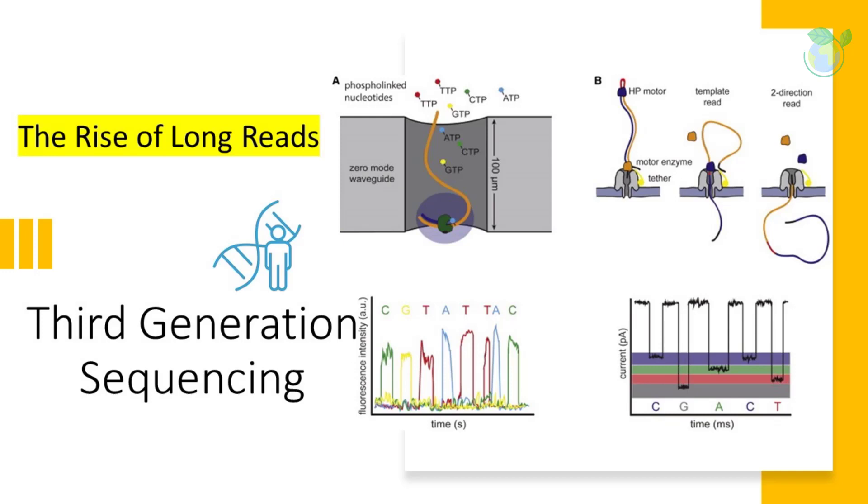Third-generation sequencing is good at sequencing long reads, but is not high-throughput, while next-gen sequencing is high-throughput, but cannot sequence long reads. This limitation of short reads in sequencing projects has led to the development of third-generation sequencing, which aims to sequence long reads with high-throughput.